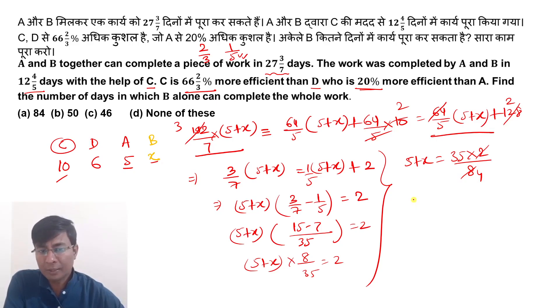So x value will be 35 by 4 minus 5, which implies 15 by 4. The question asks how much B alone can do, how many days.